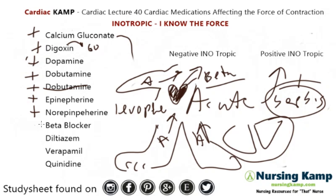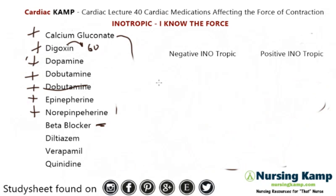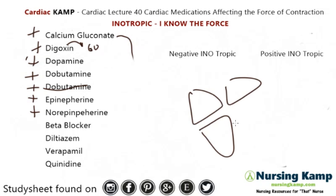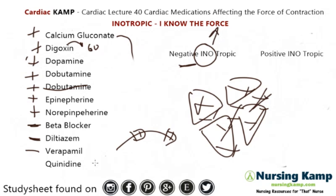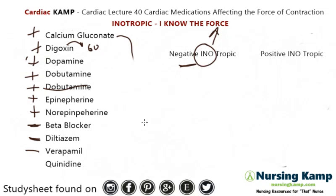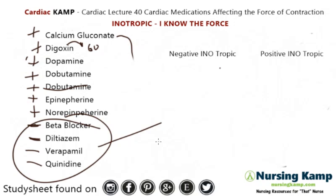And beta blockers — we know they're a negative chronotropic. We've just been talking about beta as far as contractility. Well, if a blocker is going to block the chronos and slow things down, it's also going to affect the contractility of the heart, so it's going to block that contractility — making it a negative inotropic. Same thing with diltiazem and verapamil — if you're blocking those channels, you're going to decrease the conduction and decrease the force of contraction. And the last one is quinidine, which works on the refractory period of the cells of the heart, which also slows down that force of contraction, giving it a negative inotropic effect.